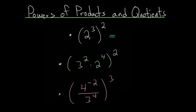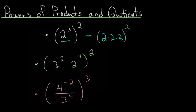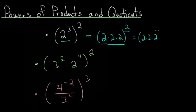Let's think about the inside first. 2 to the third power is 2 multiplied by itself 3 times, and then we're going to square that. So we want to take this whole expression and multiply it by itself. We have 2 times 2 times 2, multiplied by 2 times 2 times 2, and in total you have 6 2's multiplied together. That's where the pattern comes from — if you raise an exponent to an exponent, you just multiply.